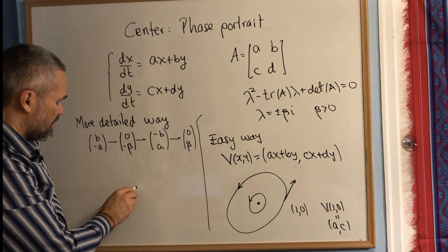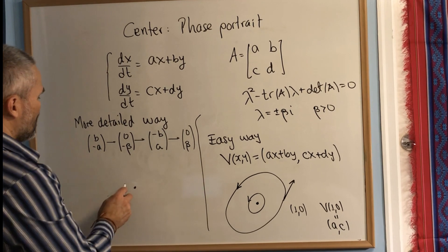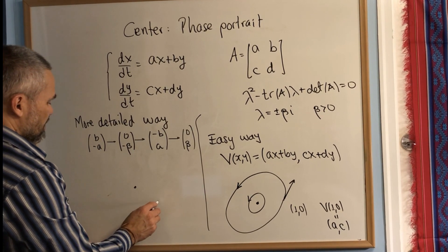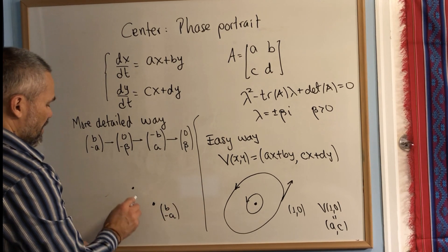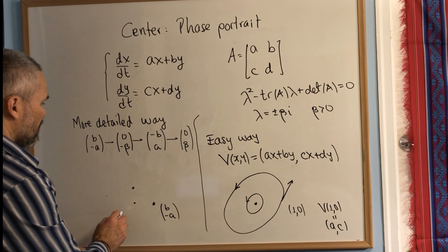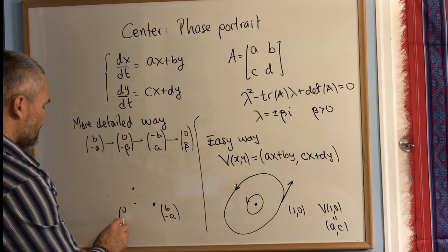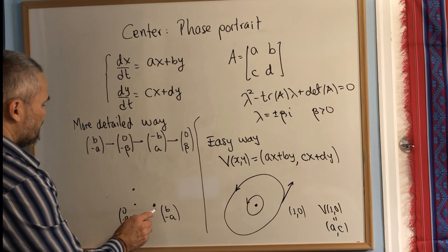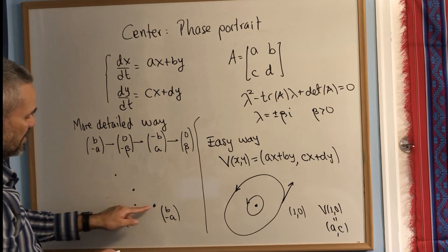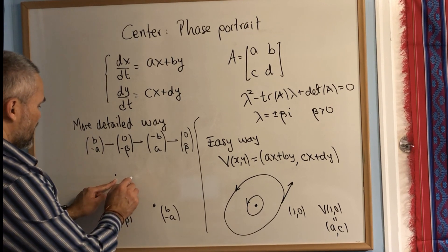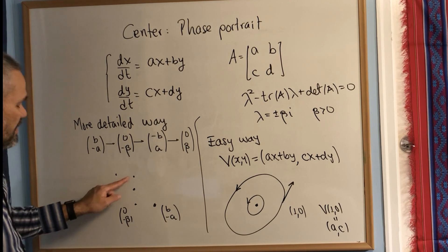We draw those vectors. Let's suppose that (b,-a) is here—this is the vector (b,-a)—and let's suppose that this is the vector (0,-β). And the other vector is the opposite of this one, which is like here—this is the vector (-b,a)—and (0,β) is this vector.